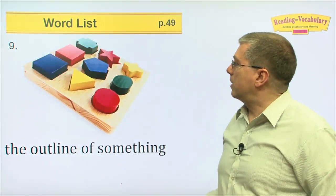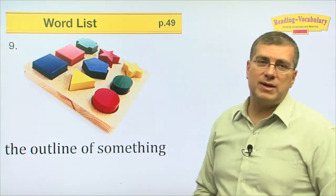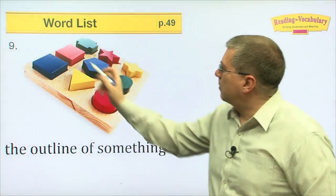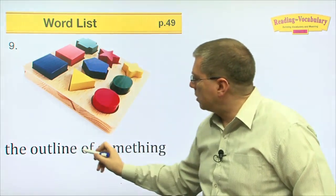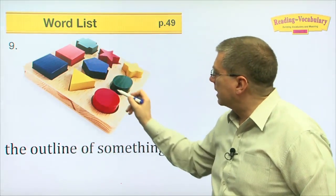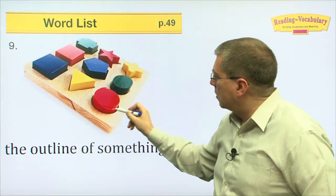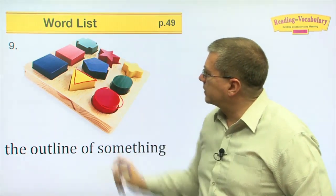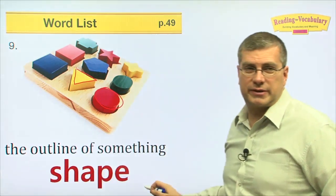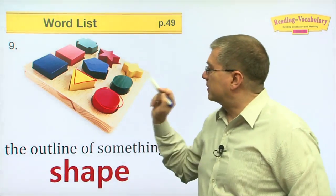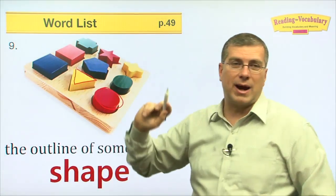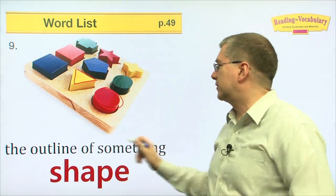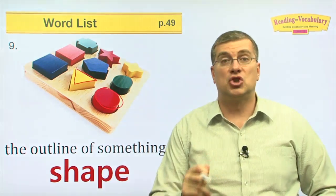Number nine — this is like a puzzle board. There are many different outlines of something. Here we have different outlines — different shapes. This is a circle, a triangle, a square. Those are different shapes. The outline of something is its shape.